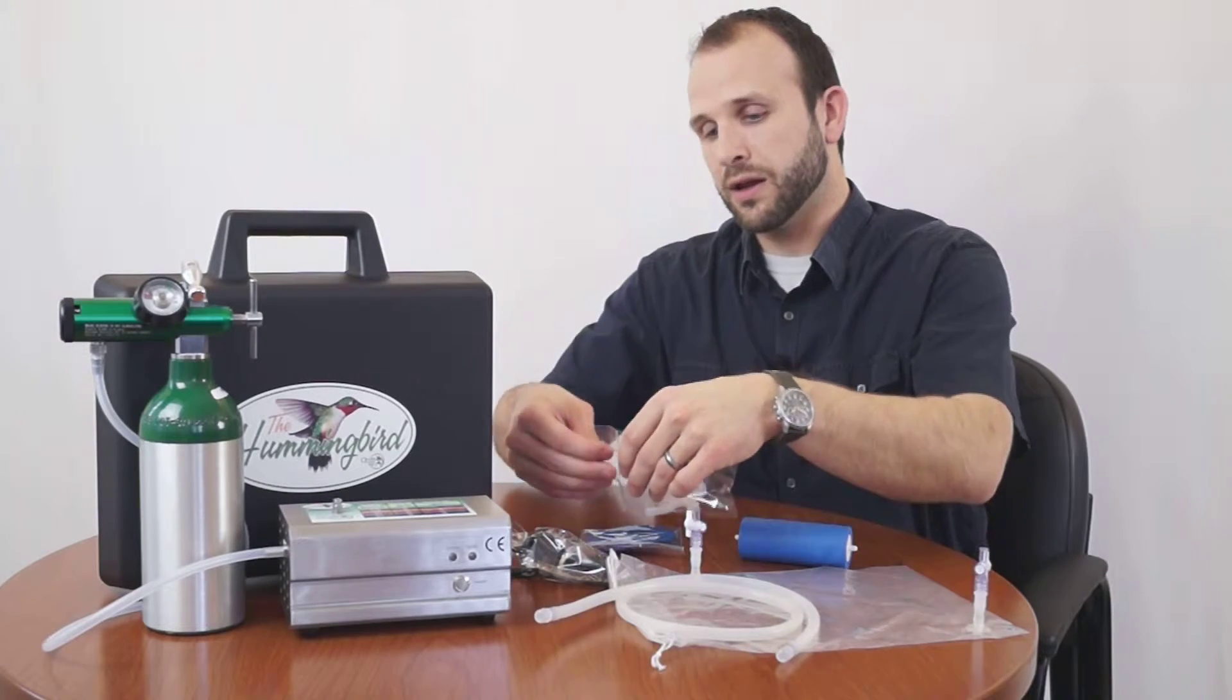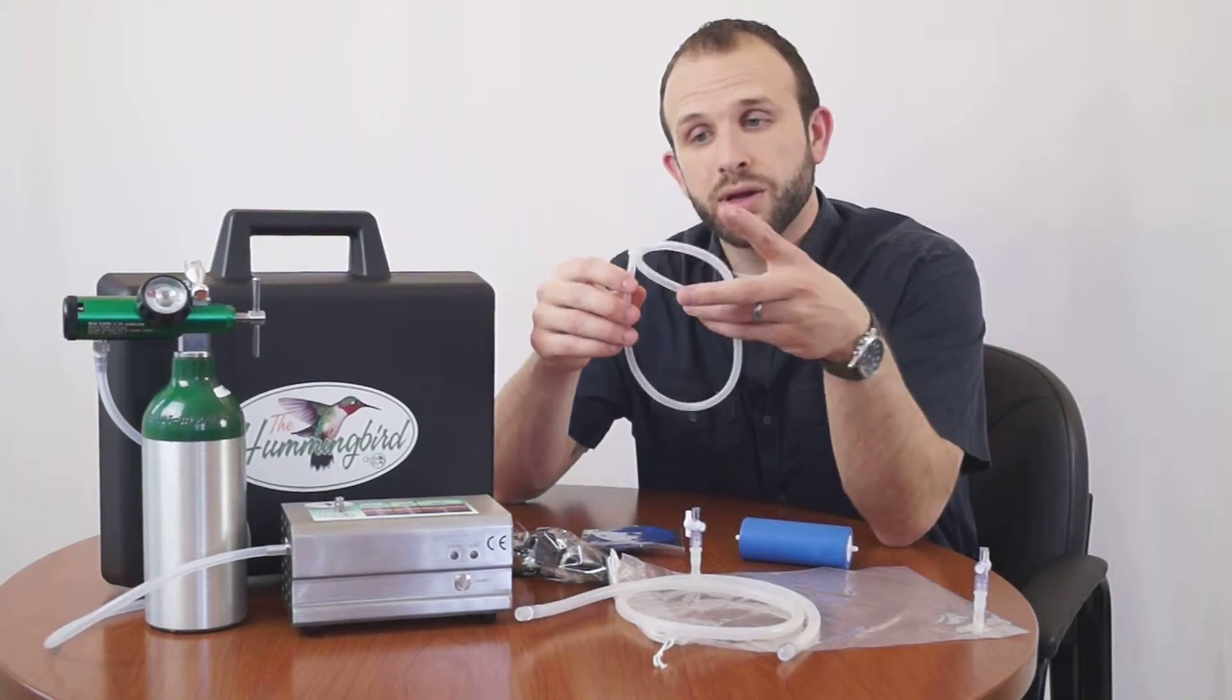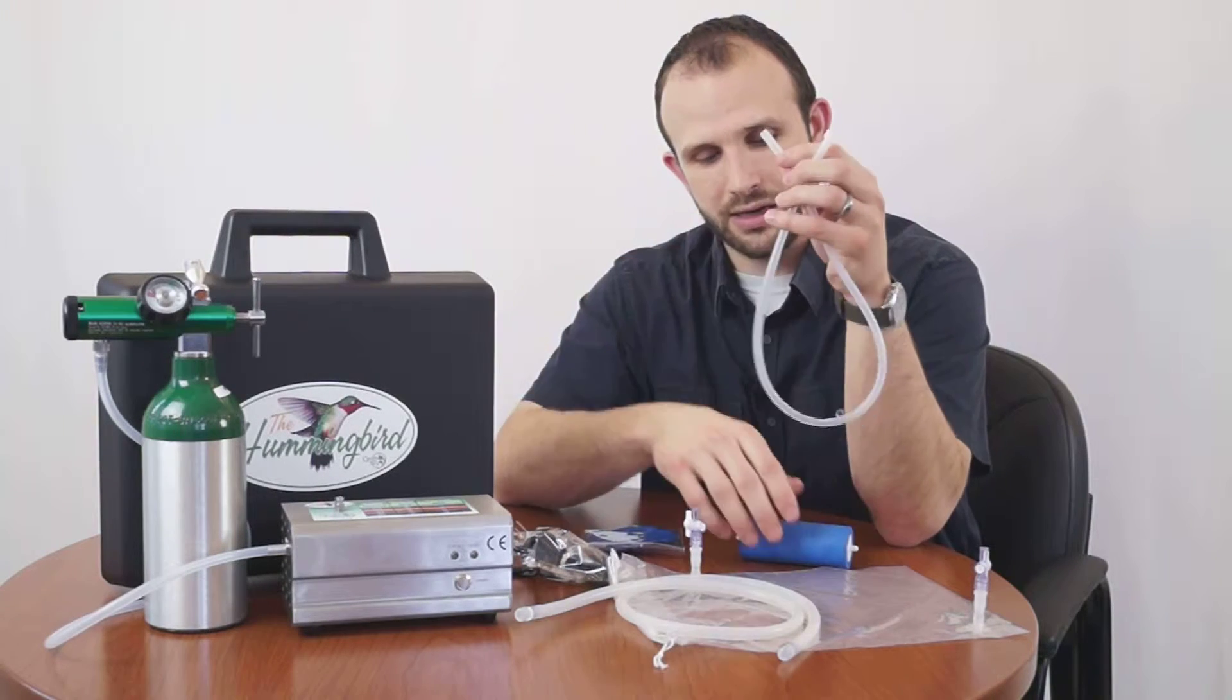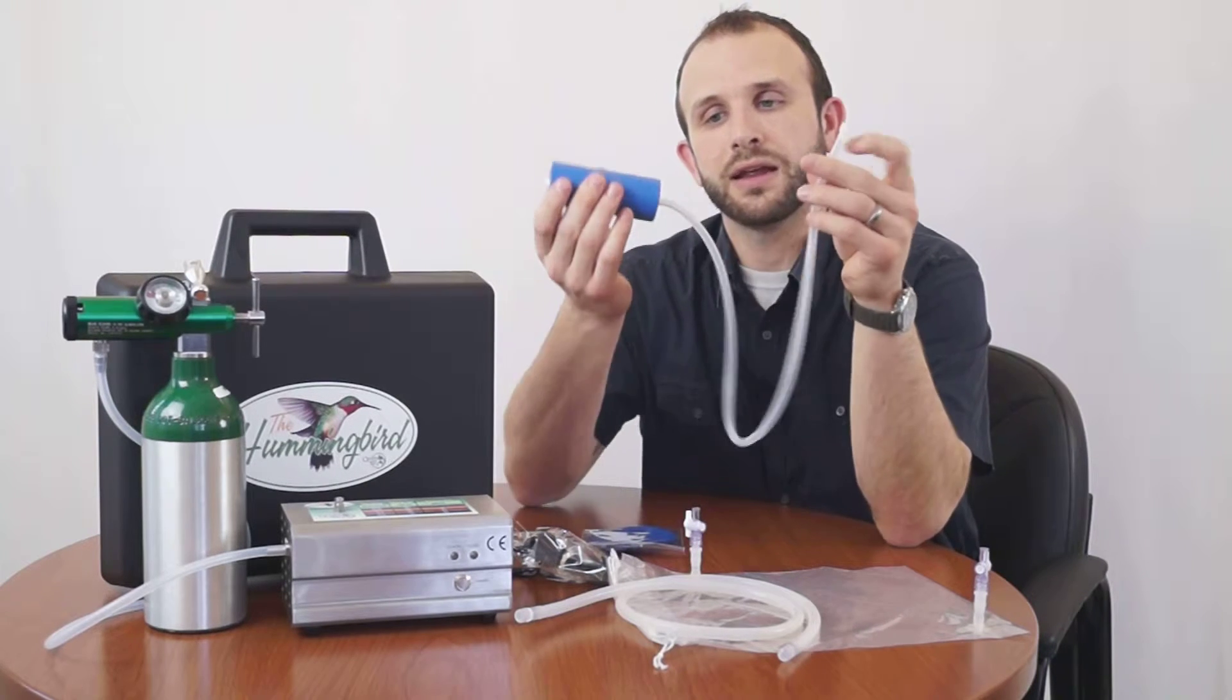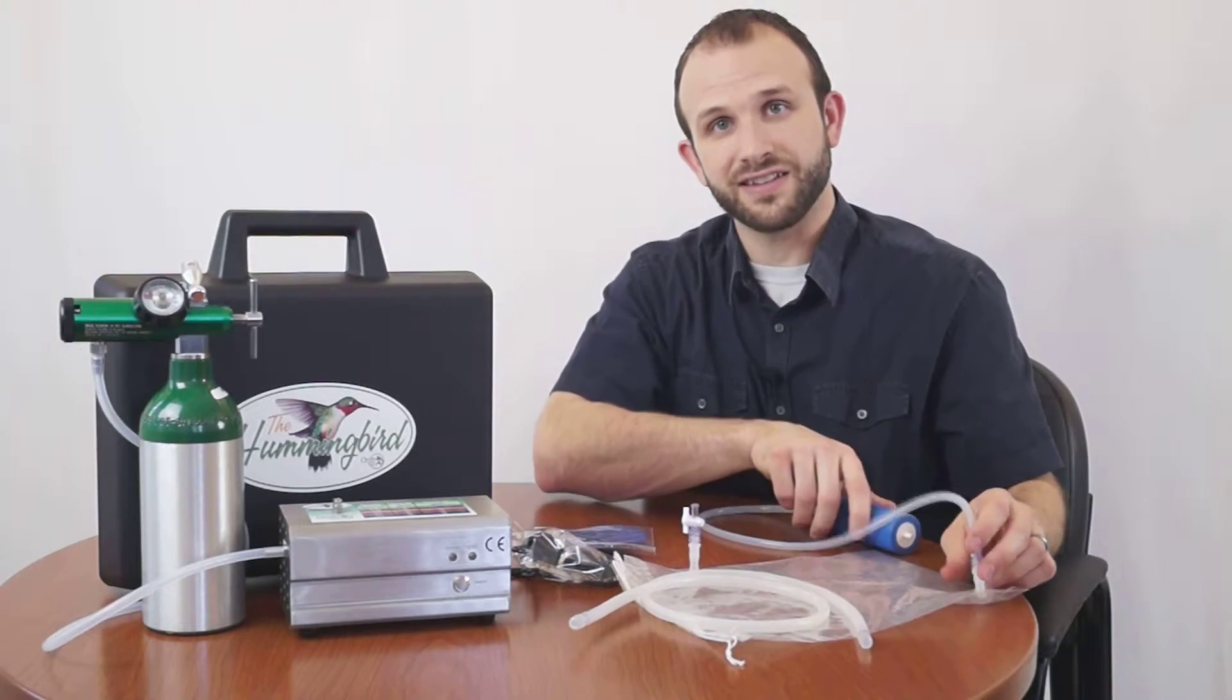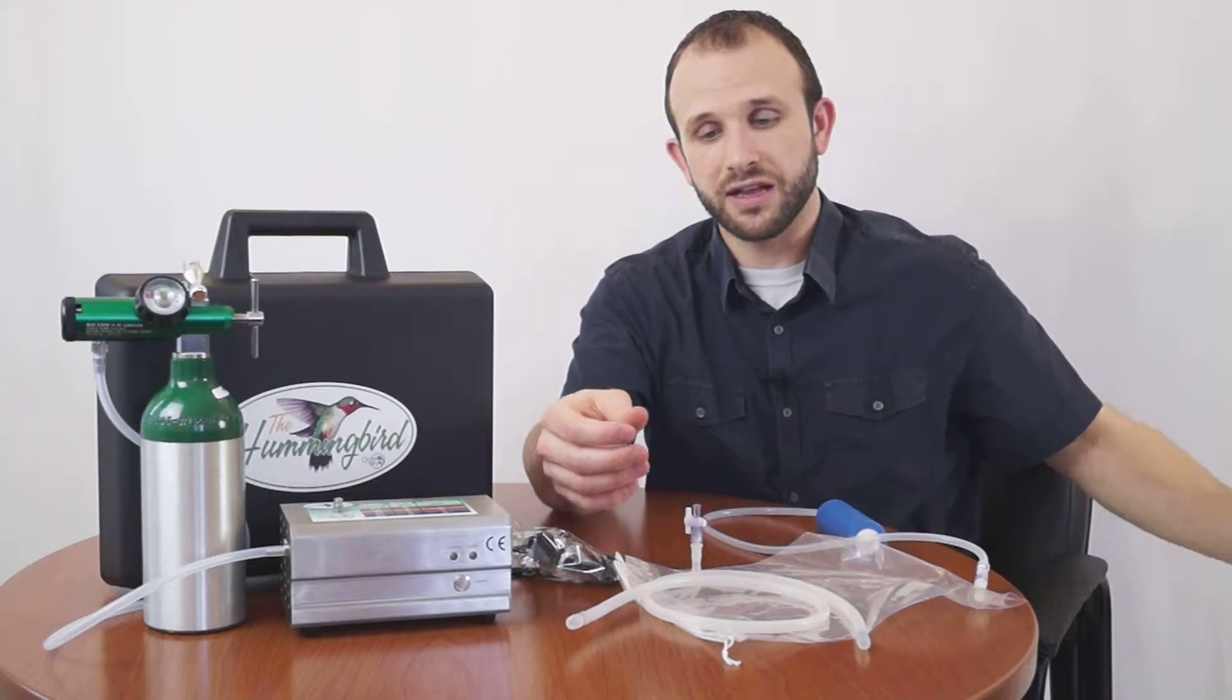The next tube that we have here is actually the tube that's going to run from our bag to the destruct. This tube will be connected to the destruct on one side and to the bag on the other side. We'll just go ahead and connect that up right now. We'll take our destruct, insert that onto the tube, and we can actually connect that directly to our bag. There we go. Now our destruct is connected and ready to capture any of that unwanted ozone or get rid of the ozone once our procedure's done.